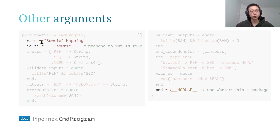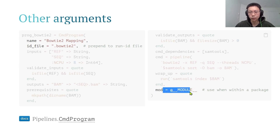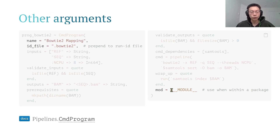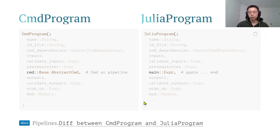Here are other arguments of CommandProgram — you can define the name and the ID file prefix, which prepends to the run ID filename. Put a dot there to hide the ID file in Linux systems. I recommend passing mod equals module when you define your program within a package; without this, all quotes will be converted into functions in the Pipelines module rather than your own module, causing incremental compilation errors. JuliaProgram is almost the same — all features are valid for both. The only difference is that instead of a command, you define a main expression.